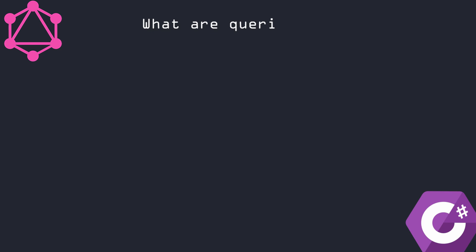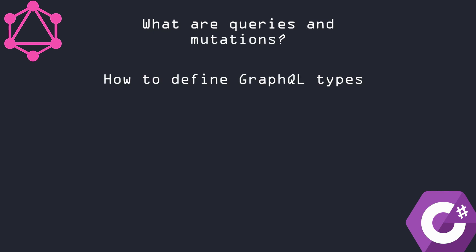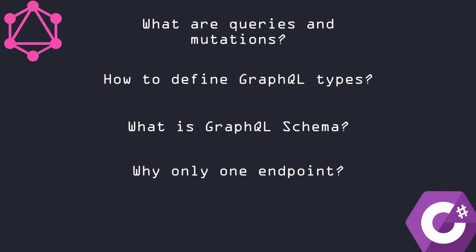So, what are queries and mutations? How to define GraphQL types? What is GraphQL schema? Why only one endpoint? And finally, how does GraphQL API work? After understanding those concepts, you will be fully prepared to continue coding and creating your first GraphQL API.